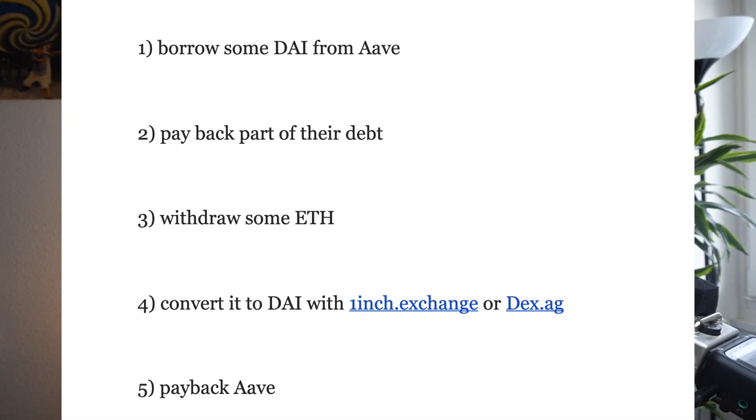One use case is self-hedging for traders. You can create debt positions on platforms such as Compound or Aave, where you lock up collateral and borrow against it to go long on a certain asset. If the price moves against you, you can be liquidated. With self-hedging, a borrower can build a flash loan script to manage their collateralized position — borrowing DAI from Aave, paying back part of the debt, withdrawing ETH, converting it to DAI with a 1inch or Uniswap swap, and paying back the rest — all in a single transaction.